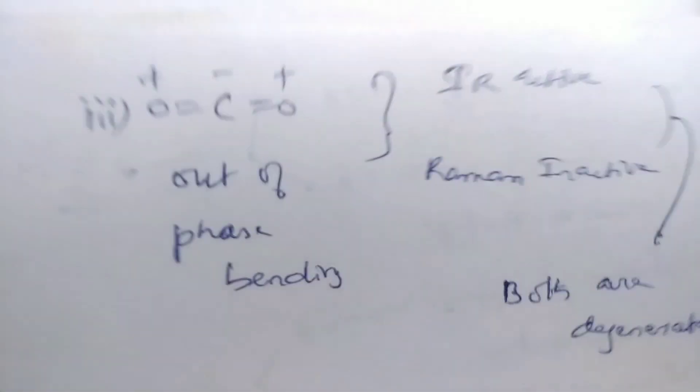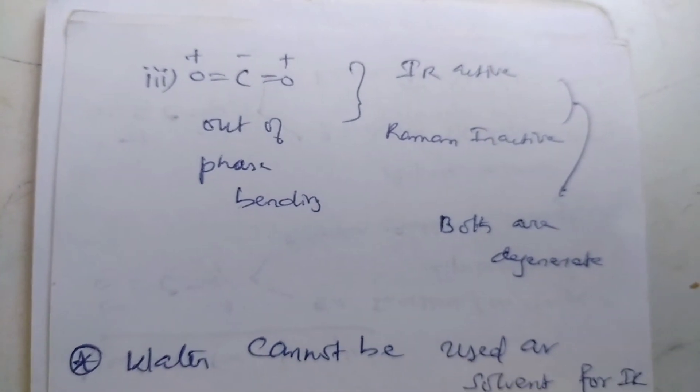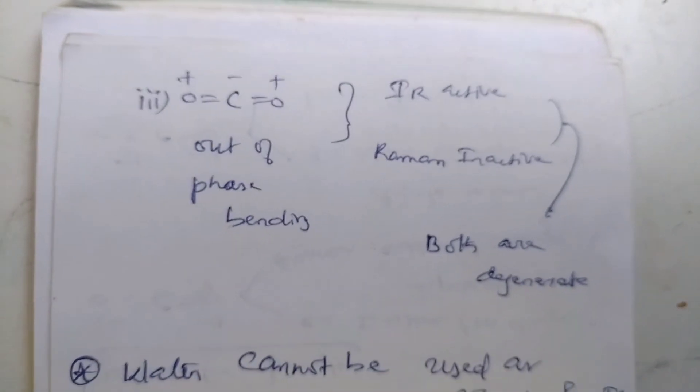Third question, carbon dioxide. Out of phase bending: IR active, Raman inactive, both are degenerate.